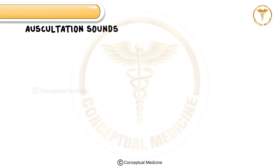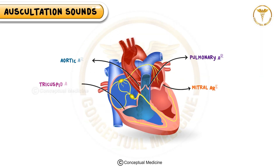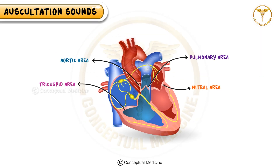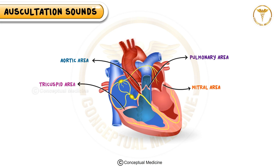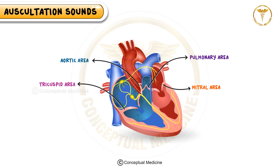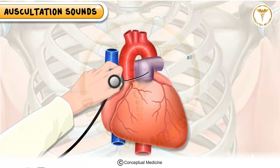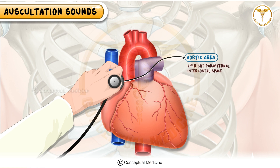The heart has four primary anatomical locations for auscultation, each corresponding to a specific valve. The aortic area is found in the second right parasternal intercostal space — this is the ideal site for detecting aortic valve murmurs.